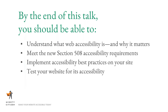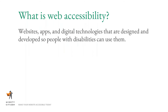So what is web accessibility? Web accessibility is websites, apps or applications, and digital technologies that are designed and developed so that people with disabilities can use them. At a very basic level, it means that your website can be used by a variety of users with different disabilities.